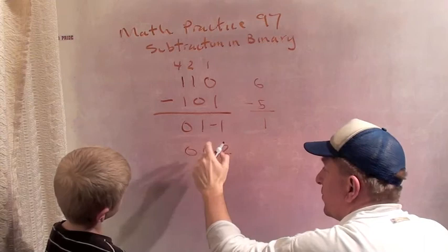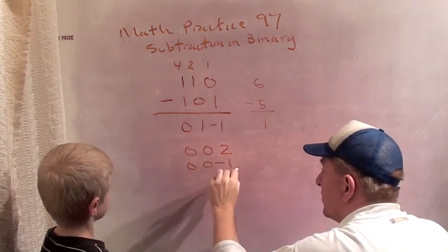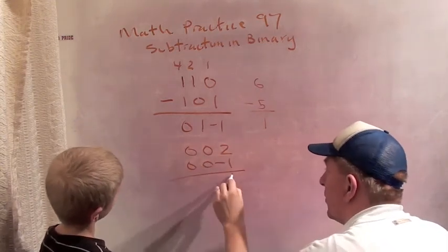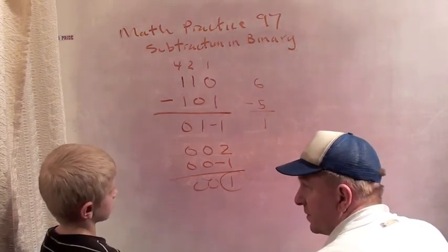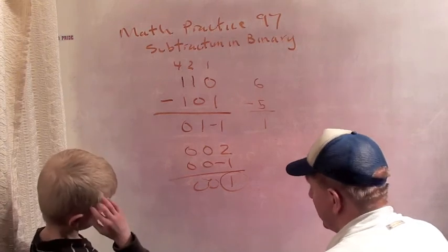And what is two minus one? One. Okay? Zero, zero, one. All right? Yeah. Okay, there's our start and subtraction.